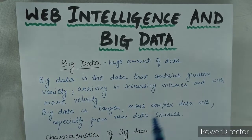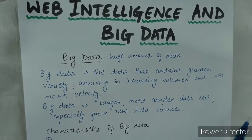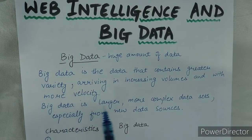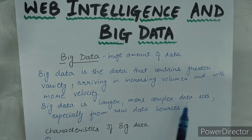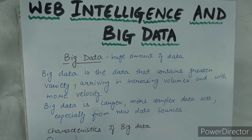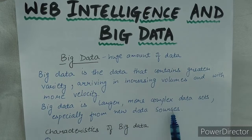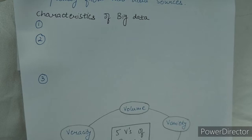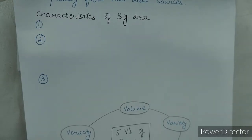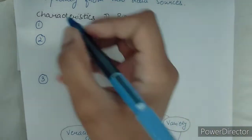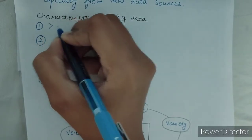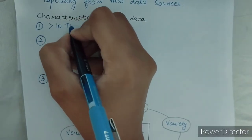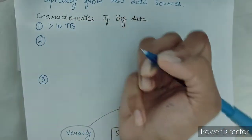I will explain all these terms. Big data is larger, more complex data sets, specially from new data sources. This is the definition. Next we have the characteristics of big data. The first characteristic is that big data is greater than 10 TB — we will call it big data.